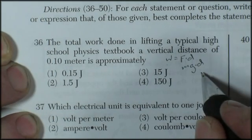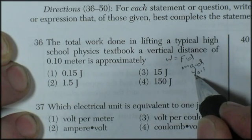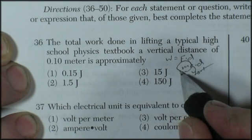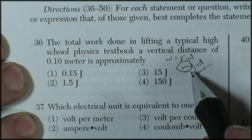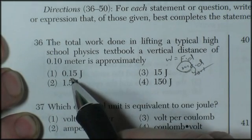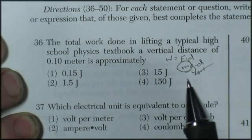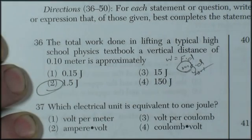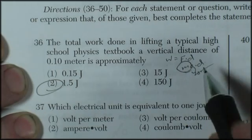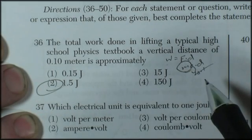The height is 0.1 and the acceleration due to gravity is 10. So when we multiply, it equals 1. So the question is essentially asking what's the mass of a typical high school textbook? Is it 0.15 kilograms, 1.5 kilograms, 15, or 150 kilograms? And the answer would be 1.5 kilograms. 1.5 times 10, 15 times 0.1, 1.5 joules.